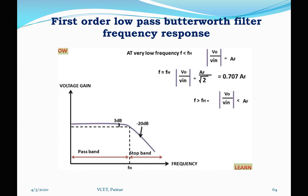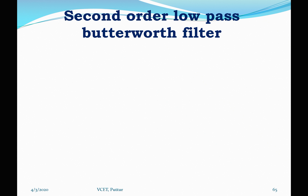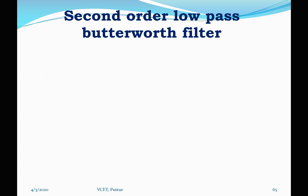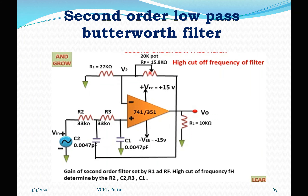Next, we study the second-order low pass filter. The stop band response with a 40 dB per decade roll-off is obtained with a second-order filter, compared to 20 dB per decade for a first-order filter. A first-order filter can be converted to a second-order filter by adding an additional RC network. Second-order filters are important when designing higher-order filters. The gain of the second-order filter is set by R1 and RF.